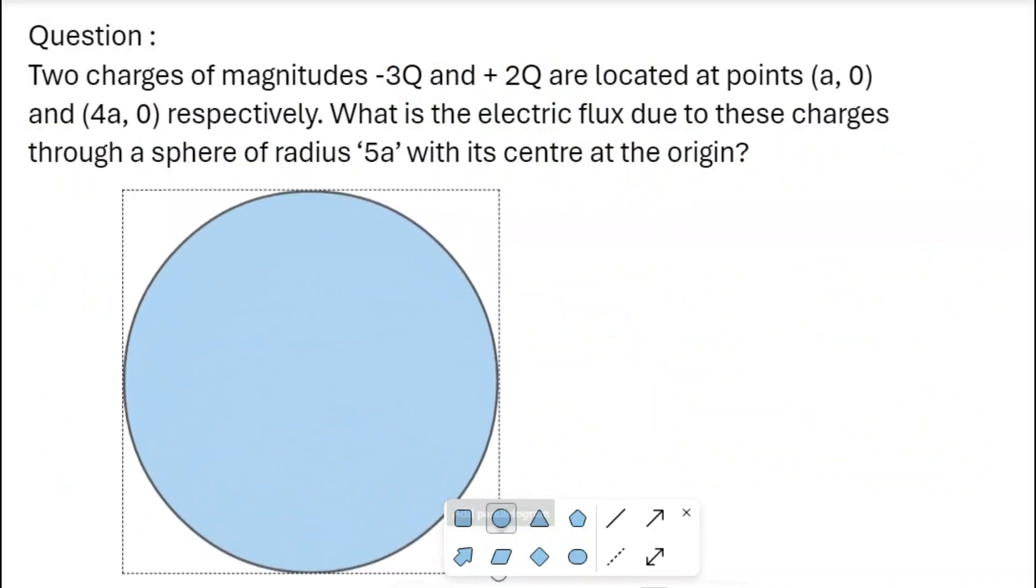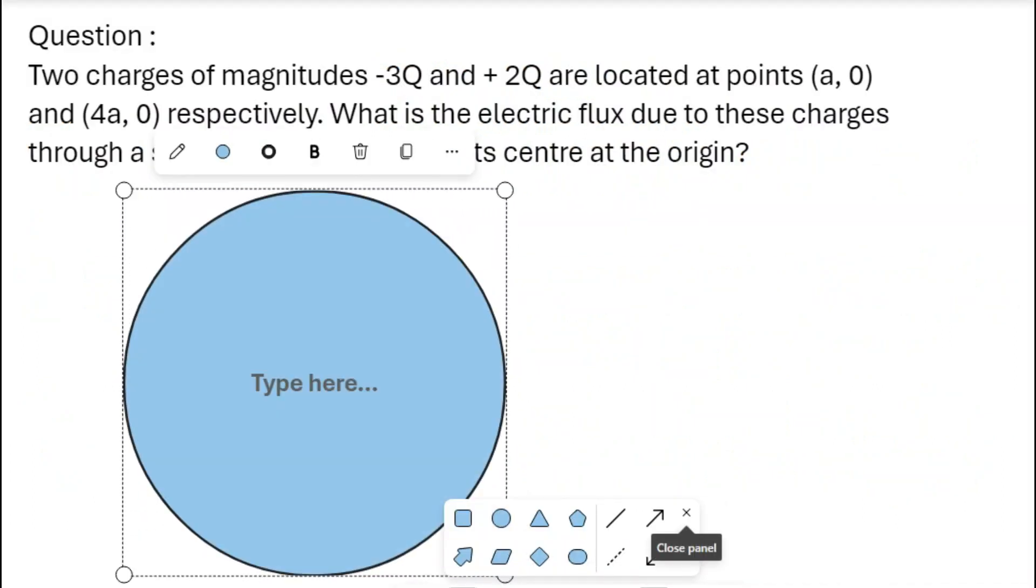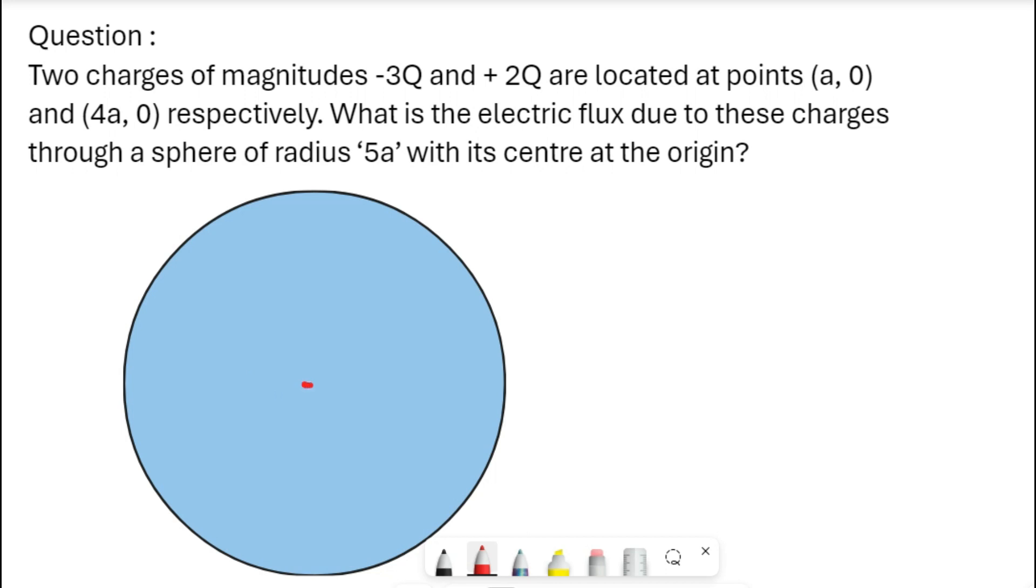A similar question was done before, a small difference in the data, otherwise the concept was the same. So here we have to draw a circle of radius 5a.